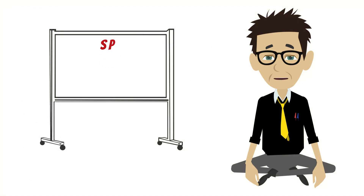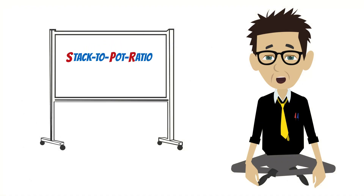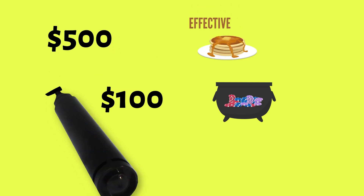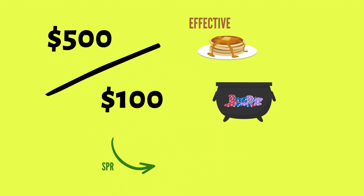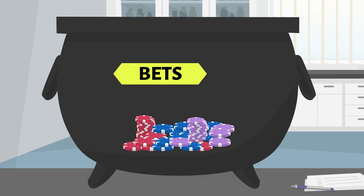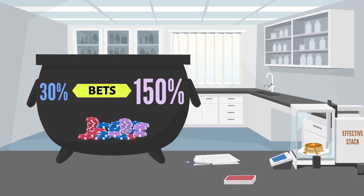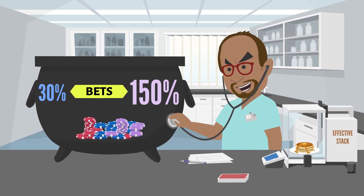As a reminder, the stack-to-pot ratio, or SPR, refers to the relationship between the number of chips in the pot and the remaining effective stack. If there are a hundred dollars in the pot and five hundred dollars left in the effective stack, then the SPR is five. In no-limit hold'em, most bets are between 30 and 150 percent of the pot — this sizing range is mathematically incentivized.